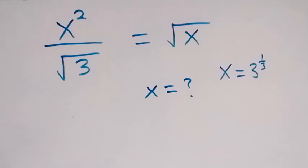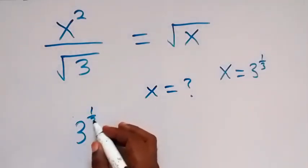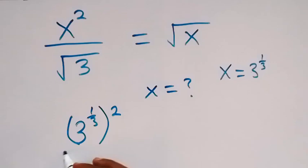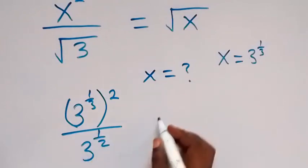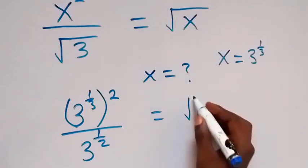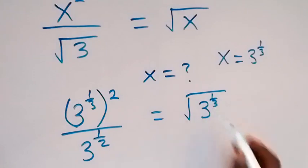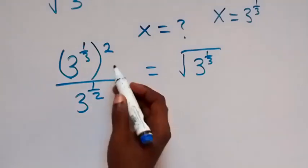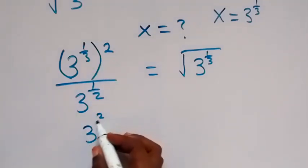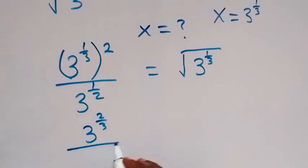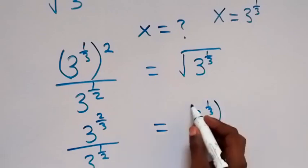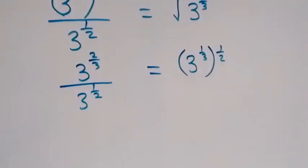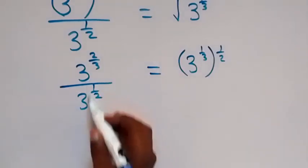Substituting x = 3^(1/3), we get 3^(1/3) raised to power 2, divided by 3^(1/2), and this should equal the square root of 3^(1/3). The left side becomes 3^(2/3) divided by 3^(1/2), and the right side is 3^(1/3) raised to power one half, which is 3^(1/6).